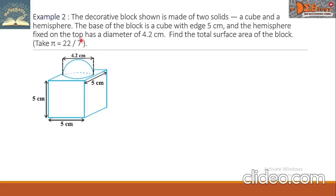Example 2. The decorative block shown is made of two solids — a cube and a hemisphere. The base of the block is a cube with edge 5 cm and the hemisphere fixed on the top has a diameter of 4.2 cm. Find the total surface area of the block. Take pi equals 22 over 7.